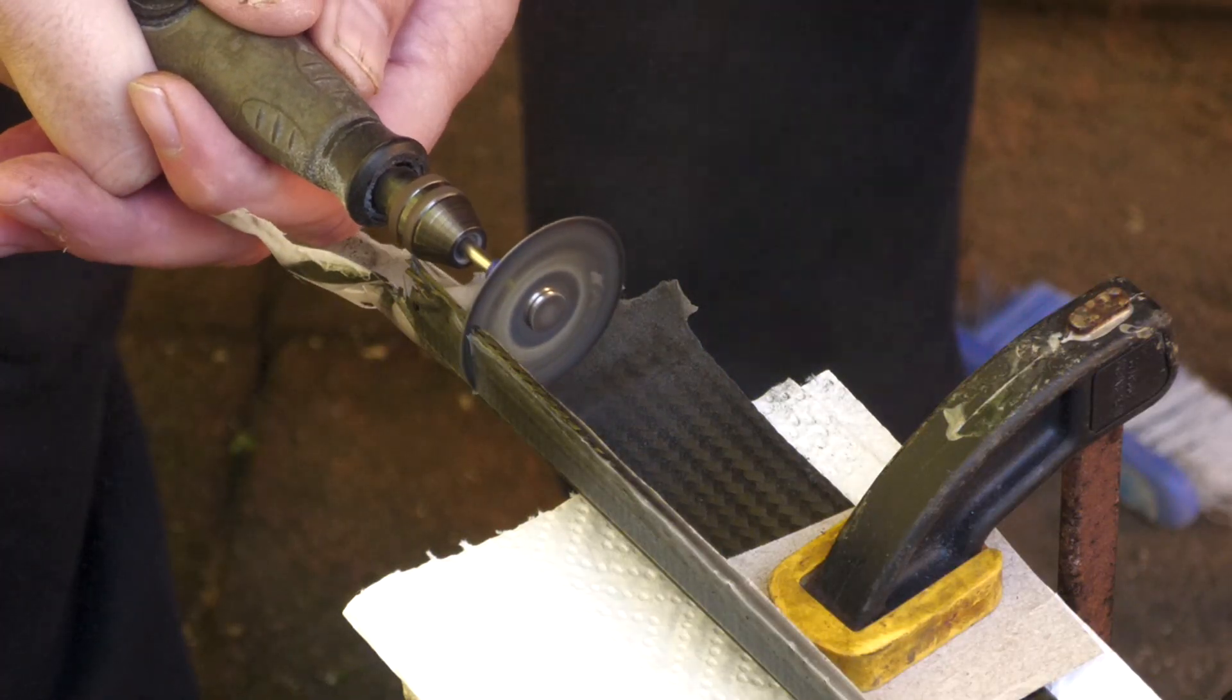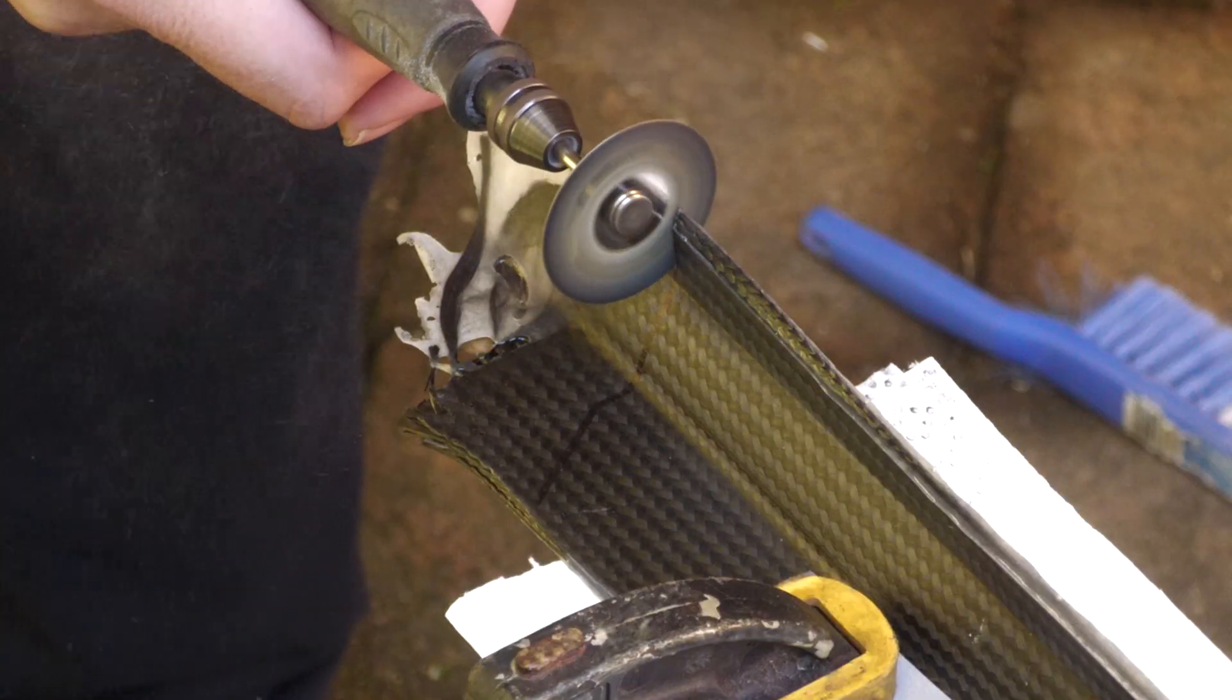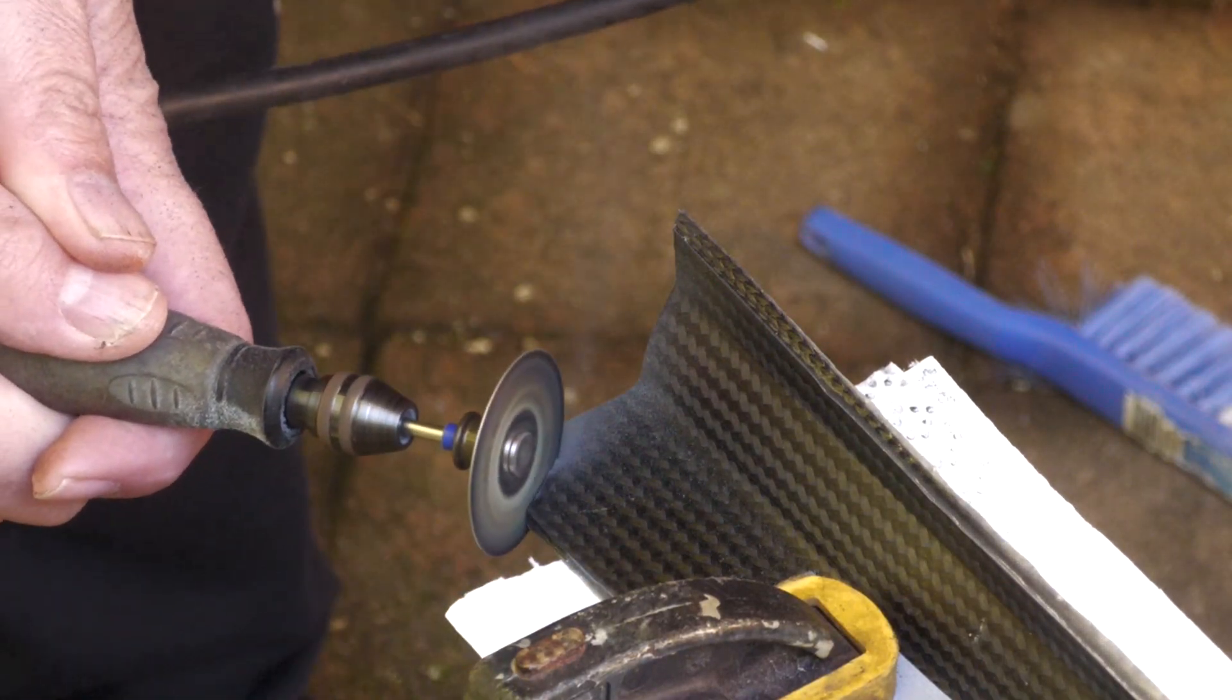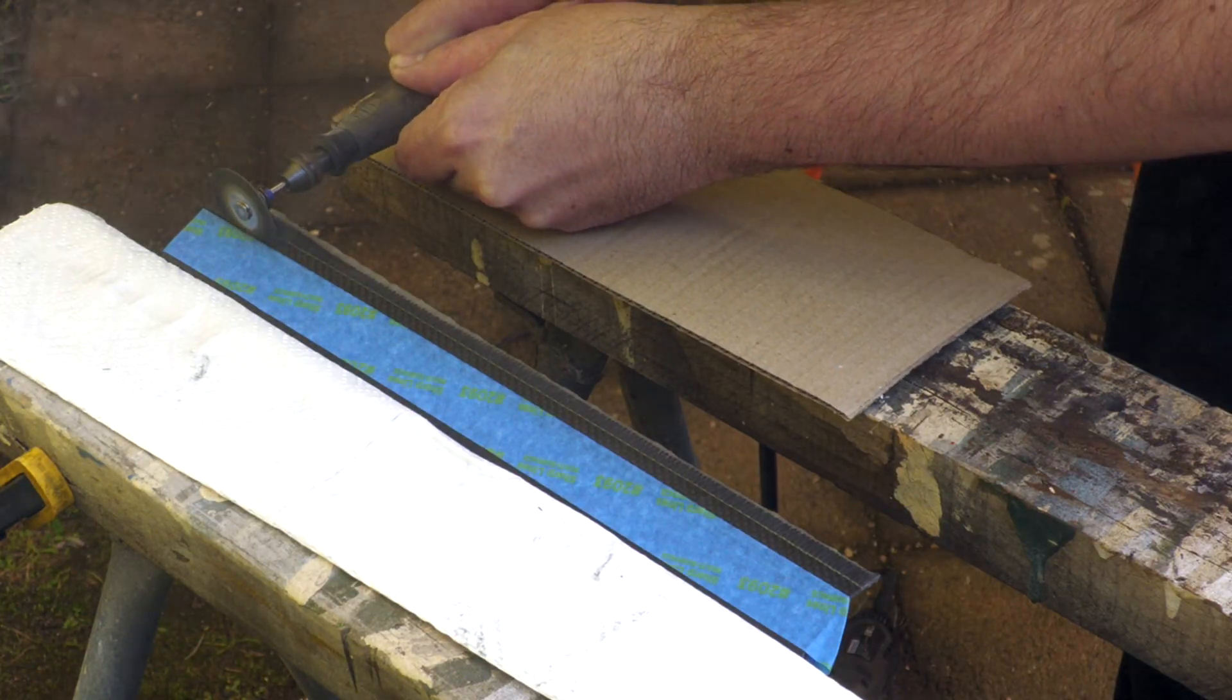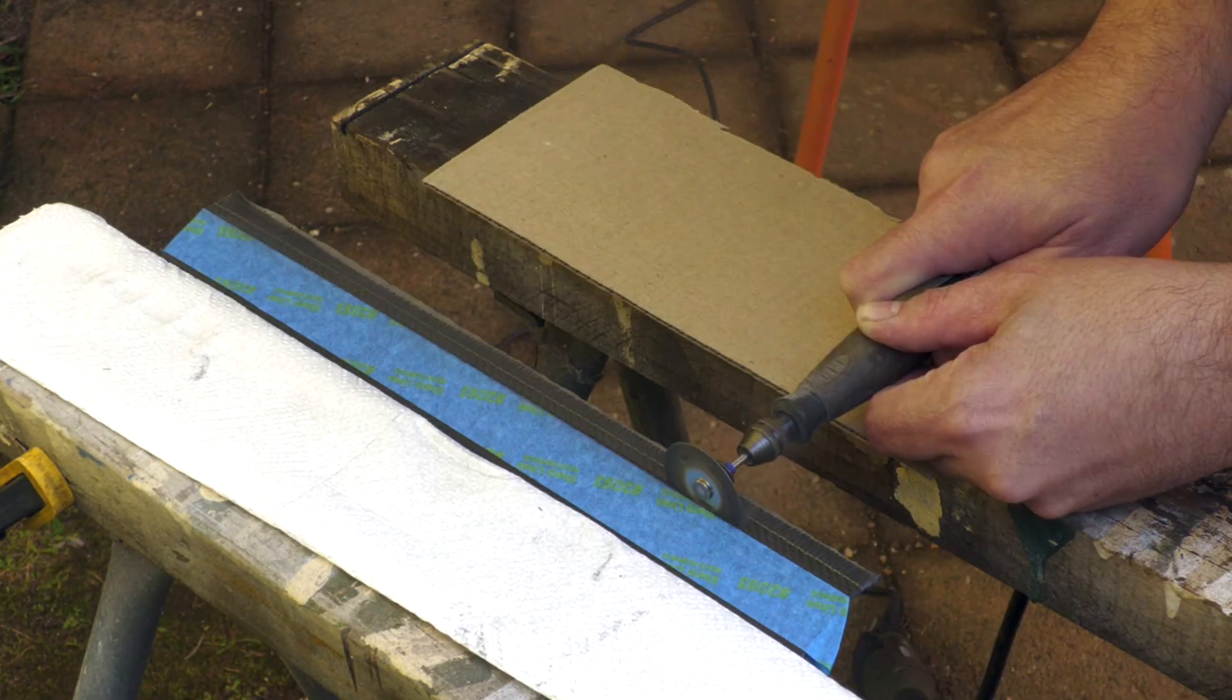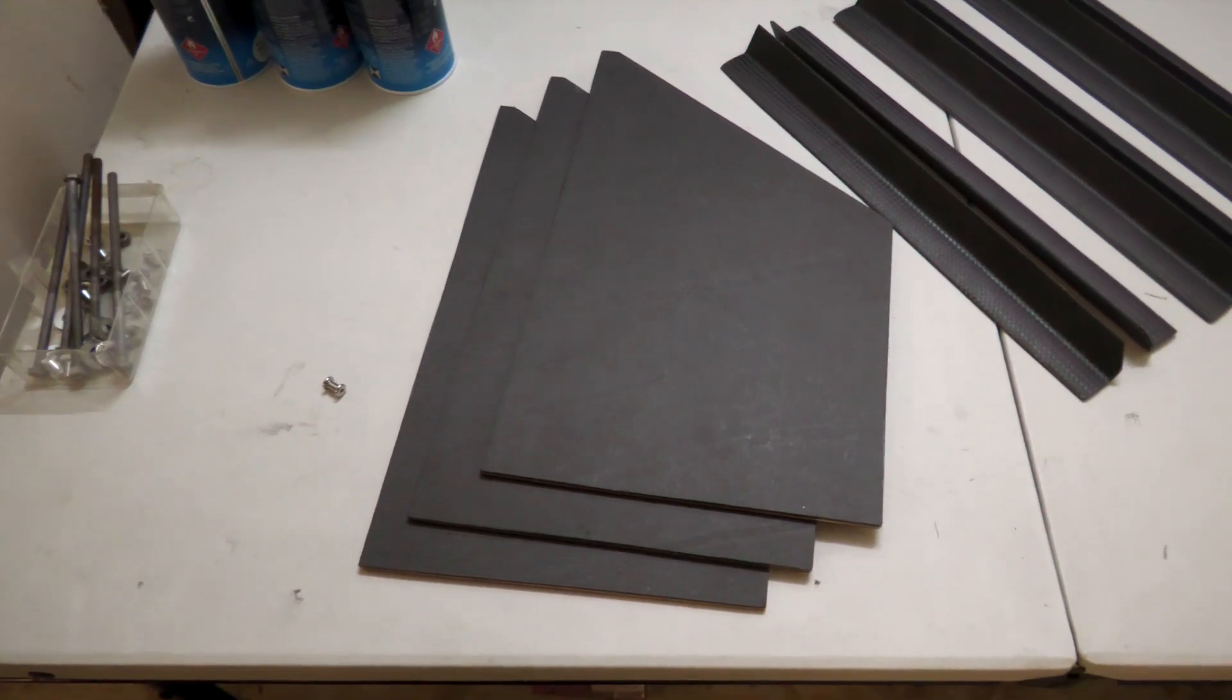We used the diamond cutoff wheel with the Dremel to trim off the excess. This is definitely a lot easier than the hacksaw. And here are the three fins with the six brackets.